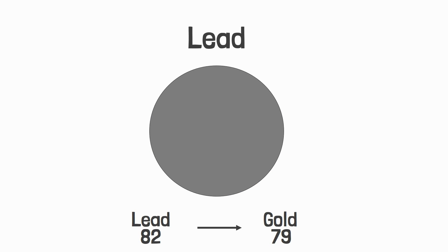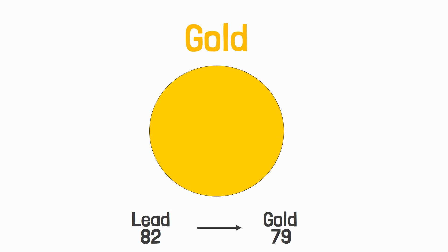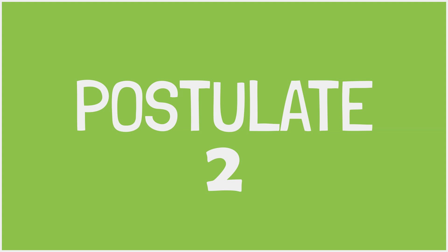Removing three protons from a lead atom converts it into gold. But to do so, we need a nuclear reaction. We cannot do such conversions with just chemical reactions.